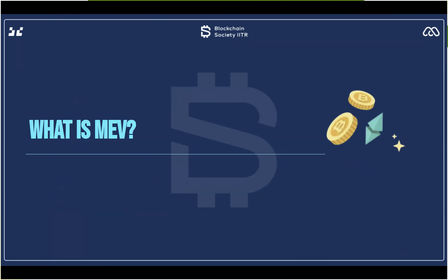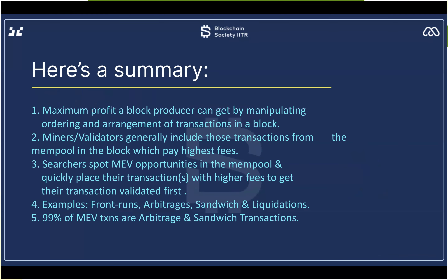So what is MEV? Here is a summary from the last lecture. It is the maximum profit which a block producer can get by manipulating the mempool — changing the order or arrangement of transactions in a block. It's the maximum value you can extract from block production in addition to the standard reward and transaction fees.